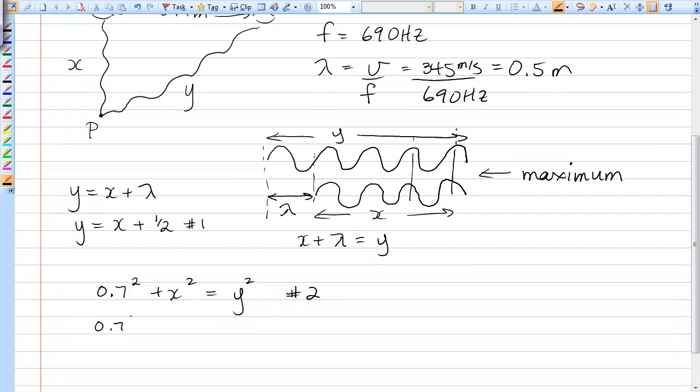So I'll just do that. 0.7 squared plus X squared is equal to X plus 1 half all squared. Expanding out that right-hand side, X squared plus 2 times X times 1 half plus 1 half squared.